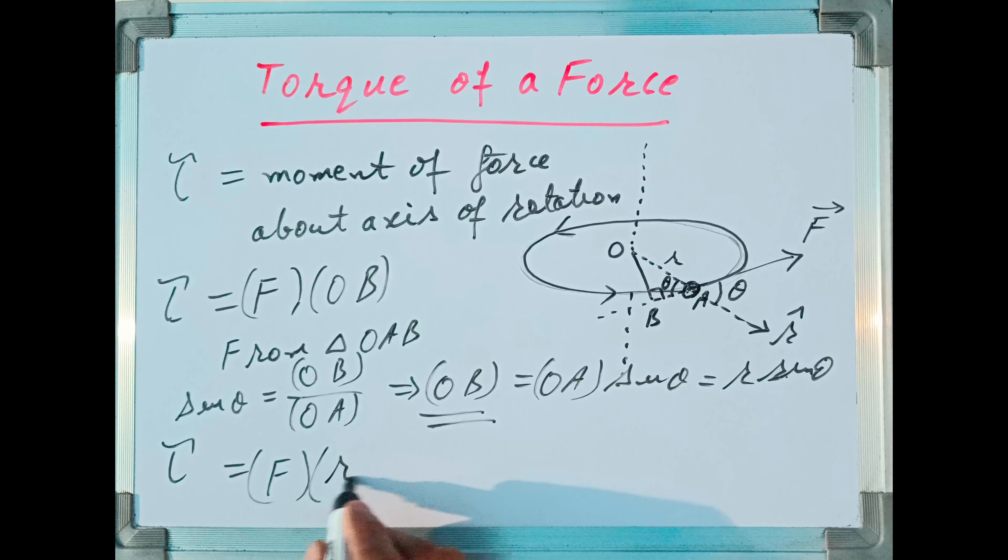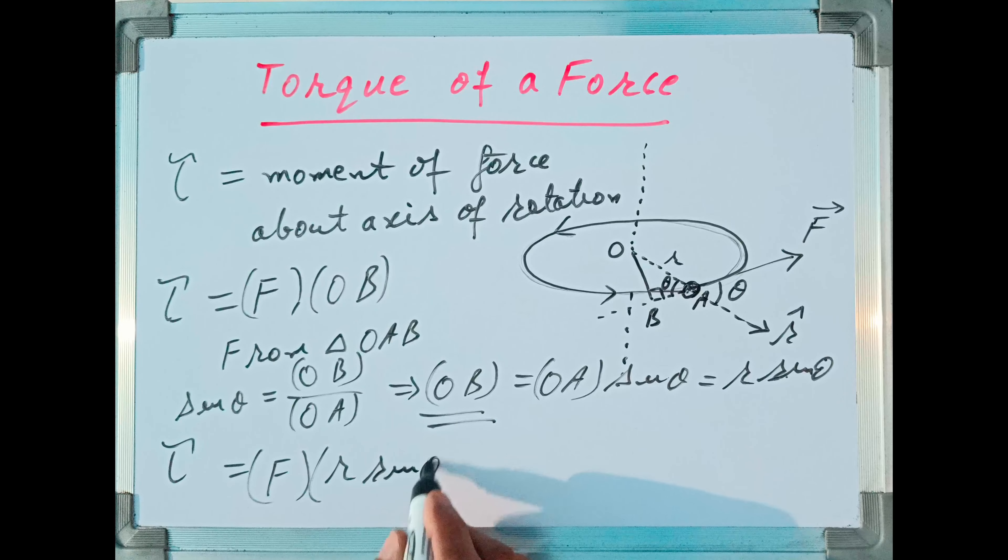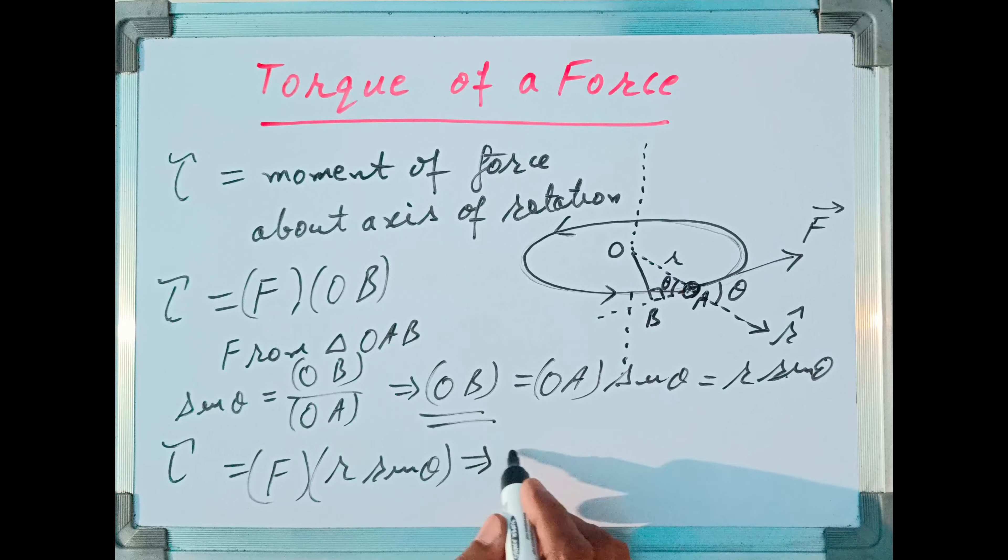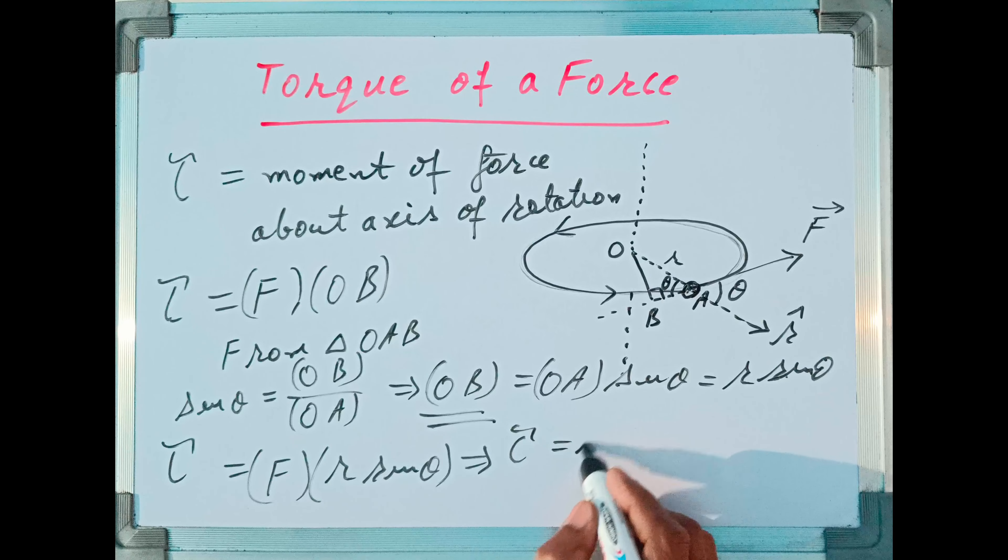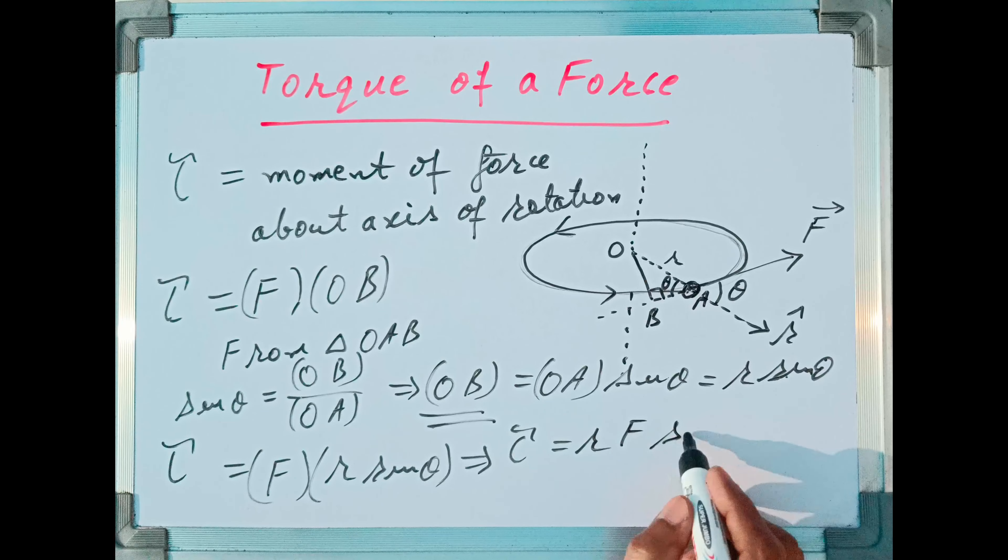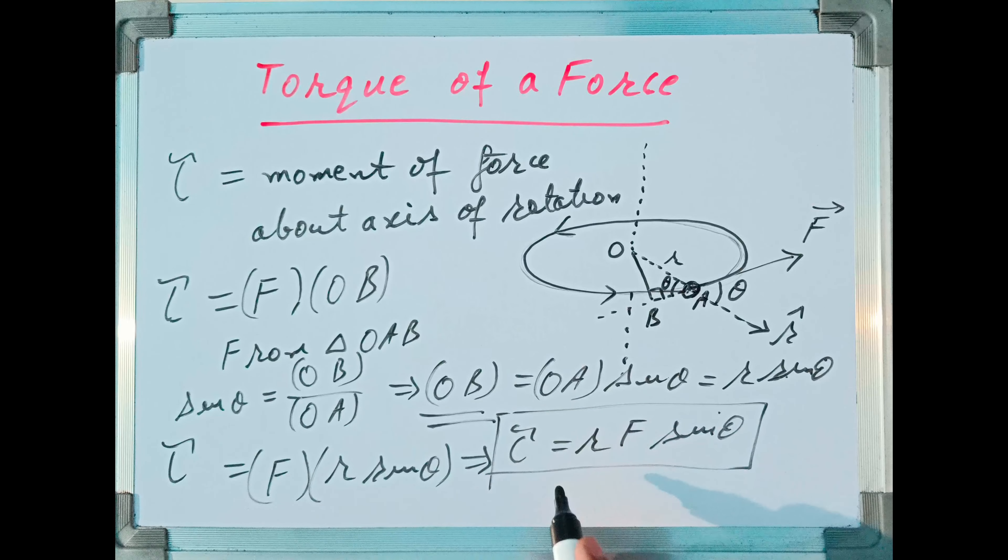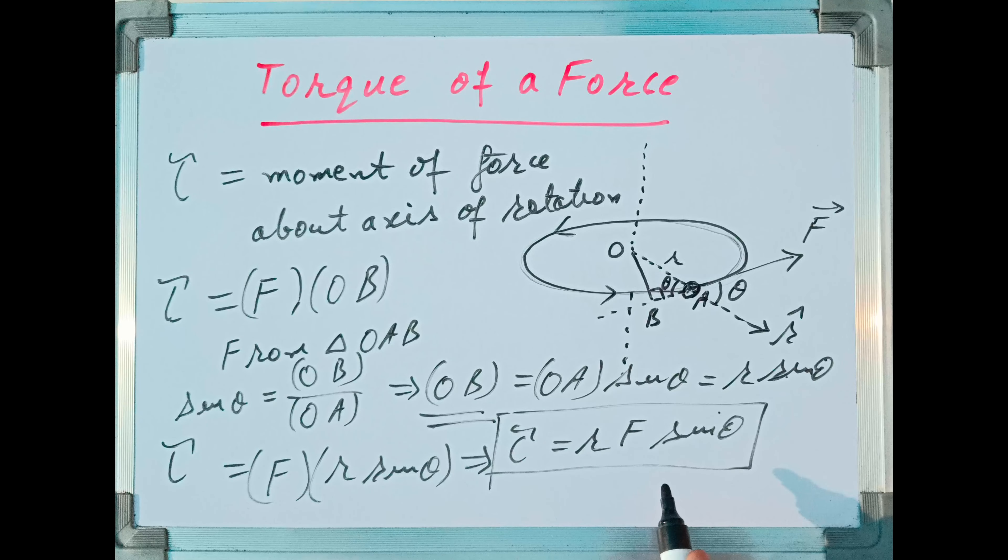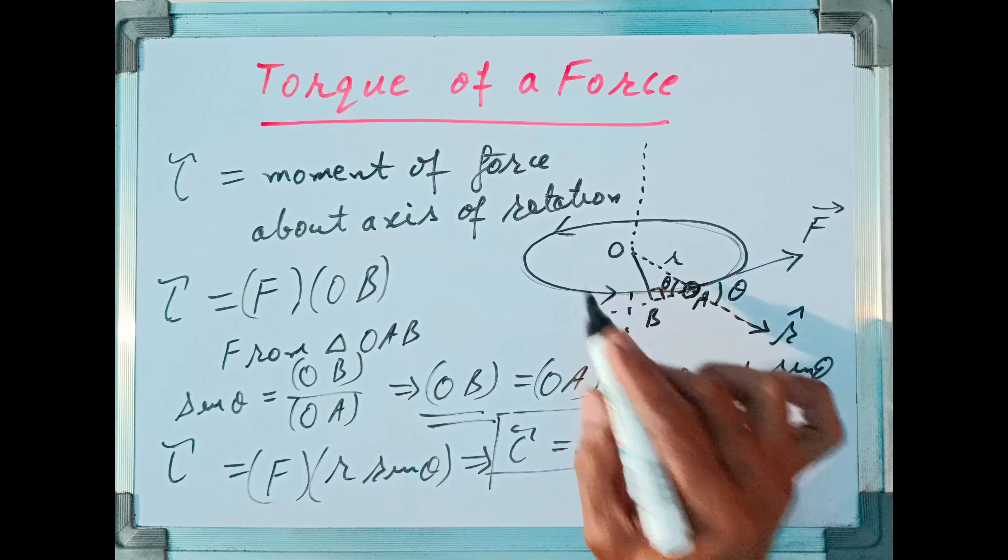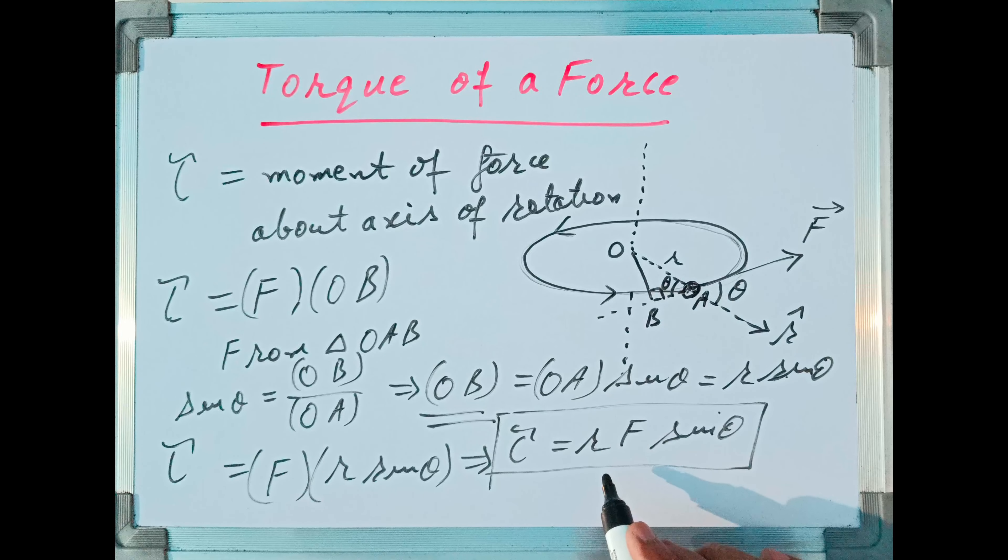Cross multiplying, I can write OB is equal to OA sin theta, and OA is nothing but the radius of the circular path followed by the body. It will give us R sin theta. So OB is equal to R sin theta. Using this value...